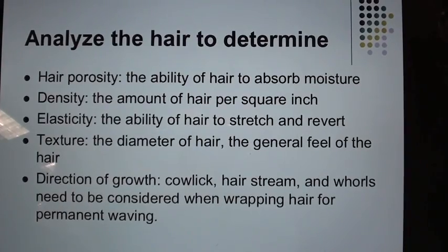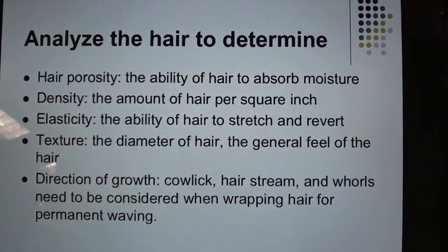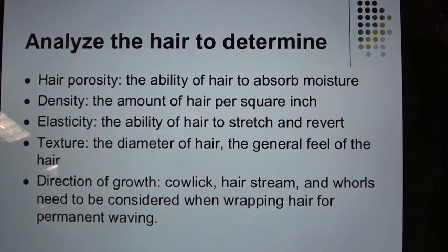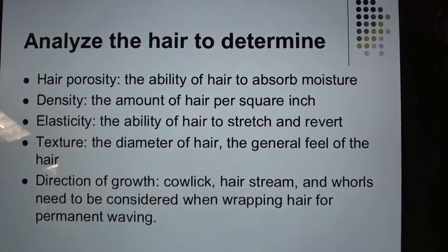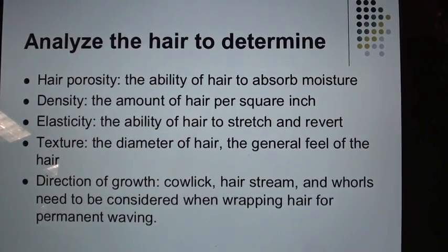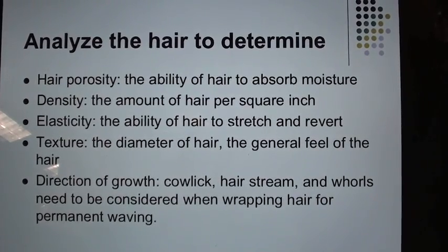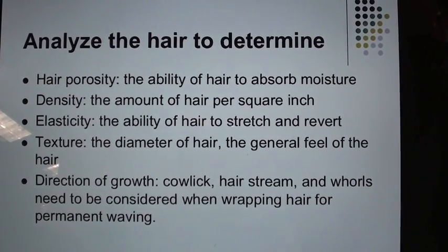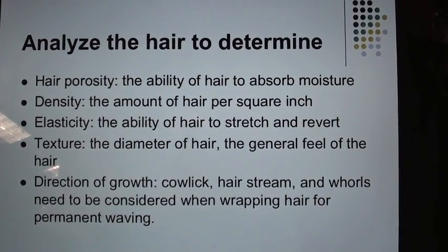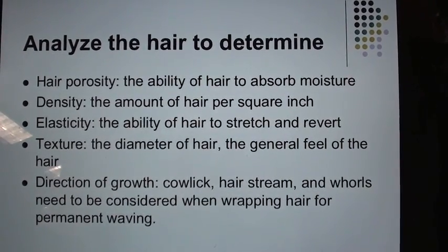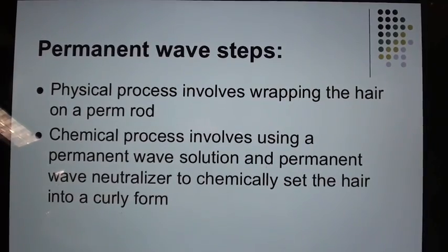Analyze the hair to determine: Porosity — the ability of the hair to absorb moisture. Density — the amount of hair per square inch. Elasticity — the ability of the hair to stretch and revert. Texture — the diameter of hair and general feel. Direction of growth — cowlick, hair stream, and whirls need to be considered when wrapping hair for permanent waving.